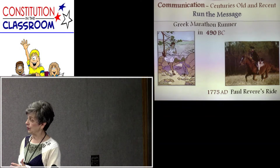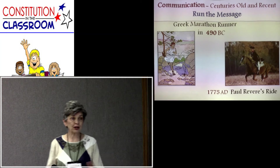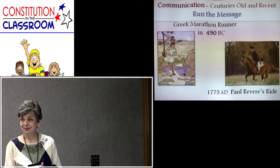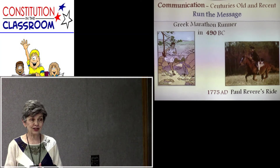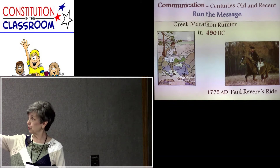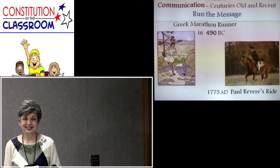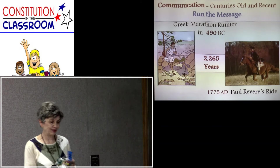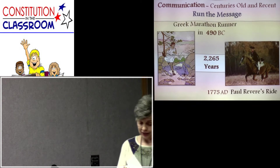Advancing to 1775 AD, Paul Revere was going from Boston to Concord and Lexington to warn people that the British were coming. How did he get there? He didn't text or phone. How many years is it between 490 BC and 1775? Two thousand, two hundred and sixty-five years. So we have a lot of fun with students being able to visualize this.